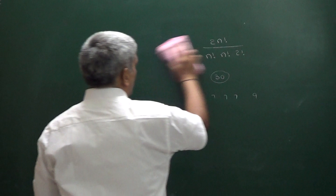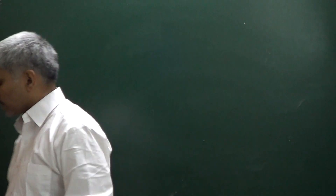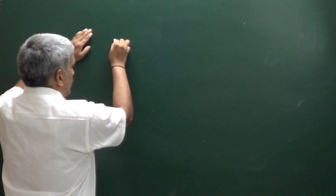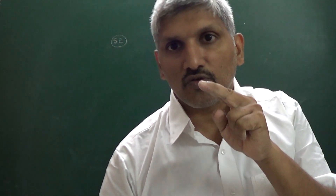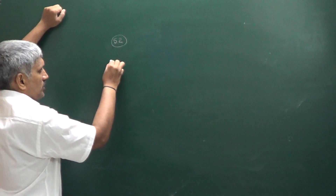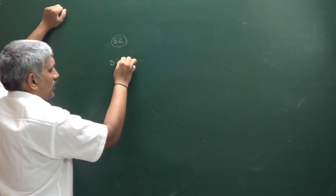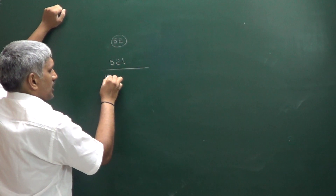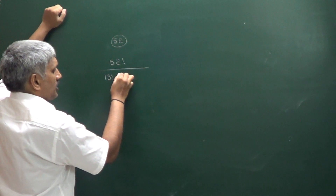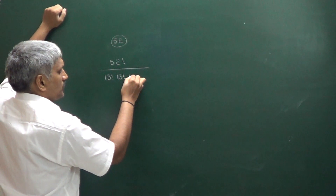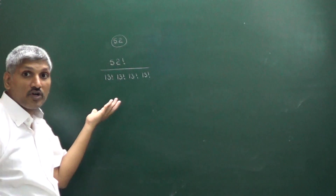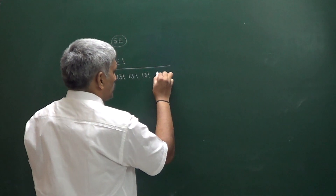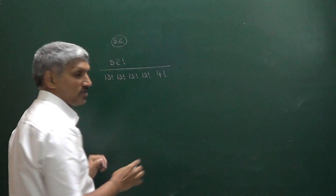Now another question: total 52 cards. These 52 cards we have to divide into 4 equal groups. In how many ways can we do it? That is 52 factorial divided by 13 factorial into 13 factorial into 13 factorial into 13 factorial. Since these are 4 equal groups, we also divide by 4 factorial.